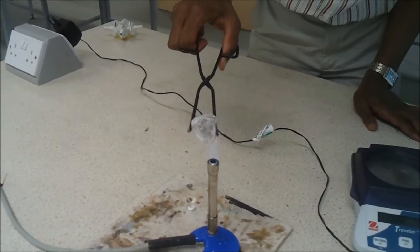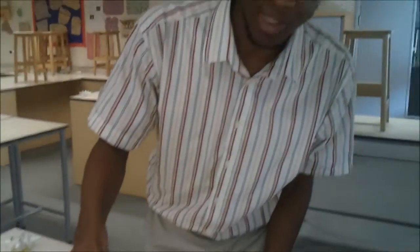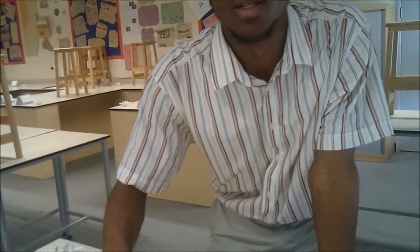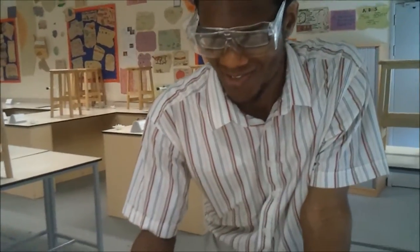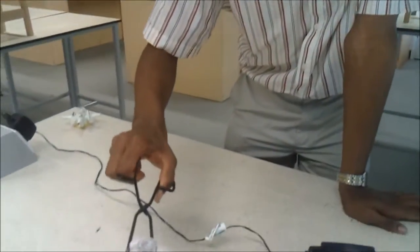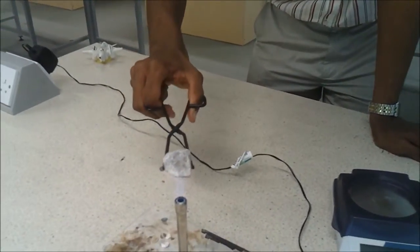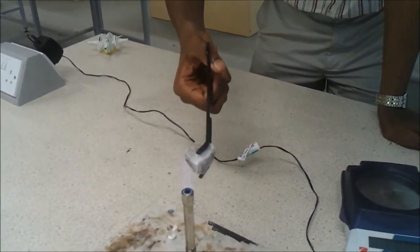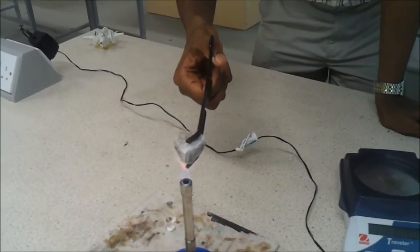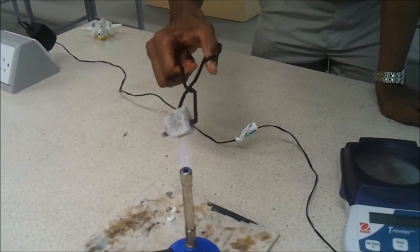And what's actually happening when you're heating it is you're getting this white deposit. We're getting this white deposit and that is calcium oxide. And what we should be giving off is the gas carbon dioxide.